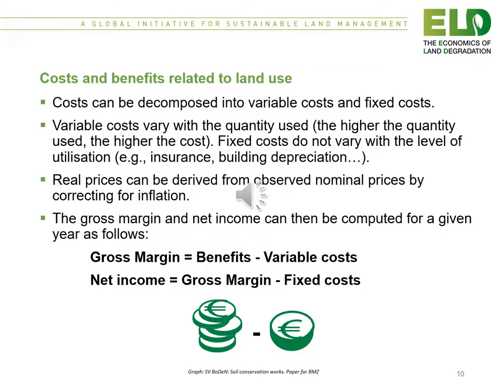Costs can be decomposed into variable costs and fixed costs. Variable costs vary with the quantity used — the higher the quantity used, the higher the cost. Fixed costs do not vary with the level of utilisation, for example insurances and building depreciation. Real prices can be derived from observed nominal prices by correction for inflation. The gross margin is equal to the benefits minus the variable costs, and the net income is equal to the gross margin minus the fixed costs.